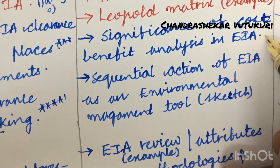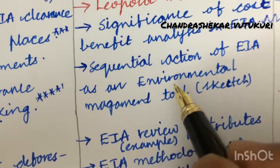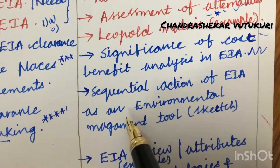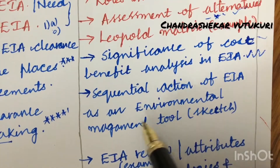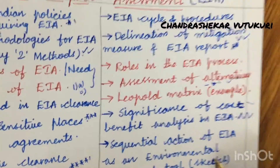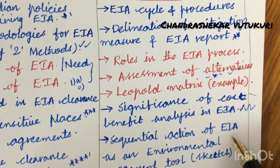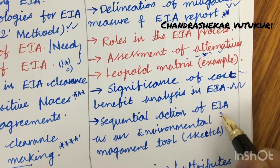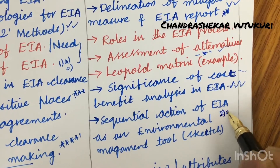The significance of cost-benefit analysis in EIA is said to be very very important, and the sequential action of EIA as an environmental management tool along with its need sketch — these are all very important gunshot questions being asked for 2A as well as 2B from Unit 1.